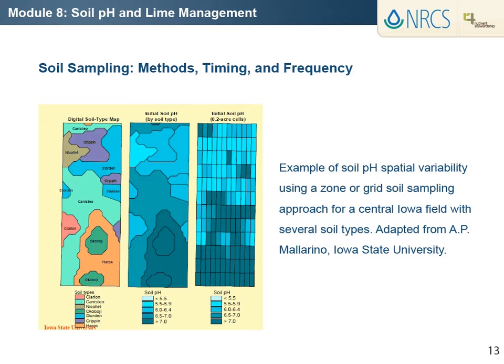However, less dense grid sampling schemes or zone sampling — for example, by soil type — are also used in areas where soil property variation dominates soil pH spatial variability. Also, remote sensing can sometimes be used to establish sampling zones for pH. For example, soybean iron deficiency chlorosis in high pH calcareous soils can be used to verify the pH is calcareous and map those areas within fields.